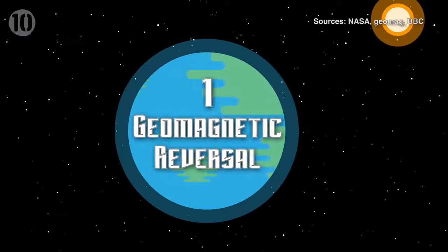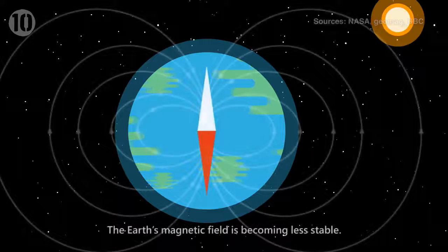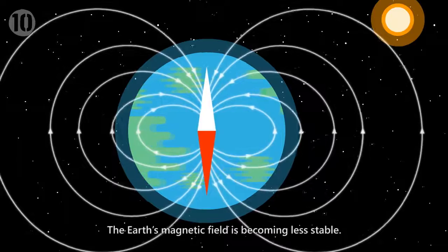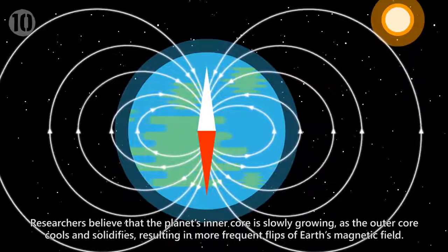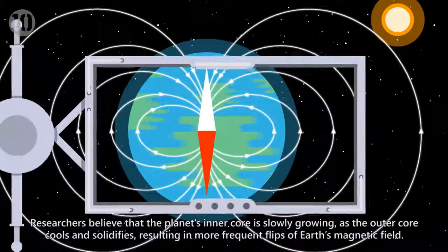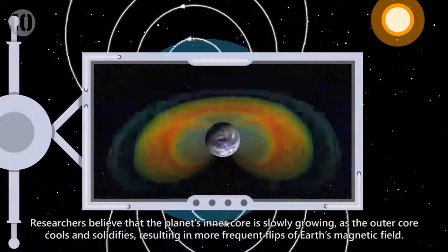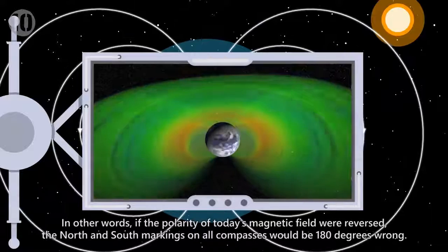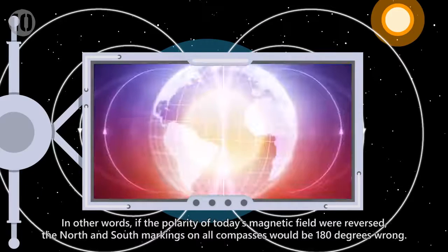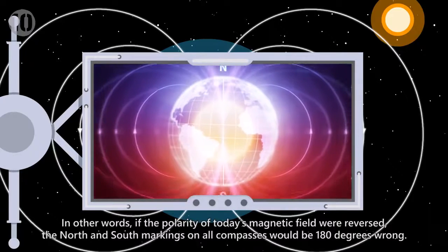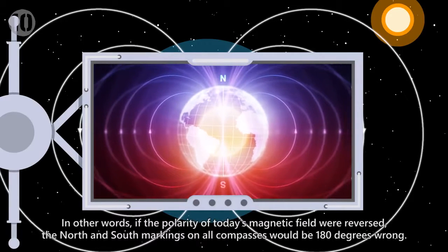Number 1: Geomagnetic Reversal. The Earth's magnetic field is becoming less stable. Researchers believe that the planet's inner core is slowly growing as the outer core cools and solidifies, resulting in more frequent flips of Earth's magnetic field. In other words, if the polarity of today's magnetic field were reversed, the north and south markings on all compasses would be 180 degrees wrong.